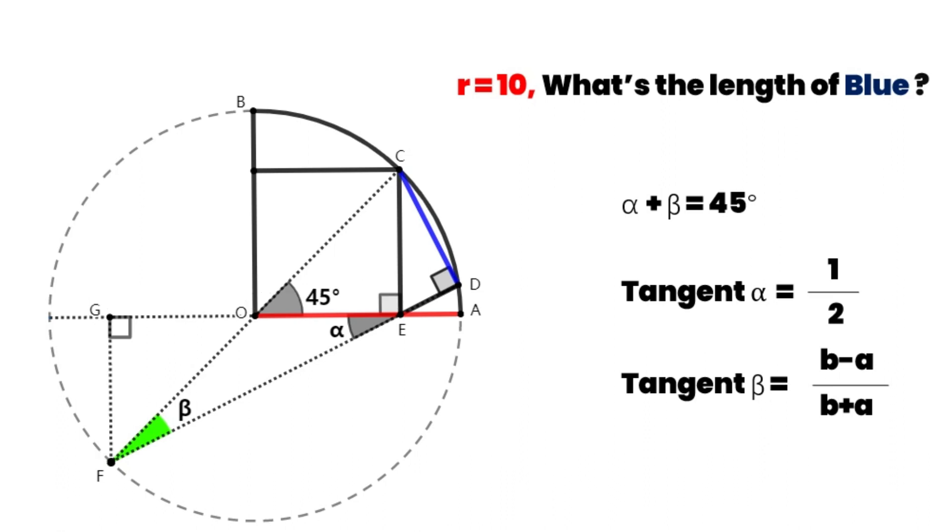Tangent beta is going to be 2 minus 1 over 2 plus 1, which is equal to one third.